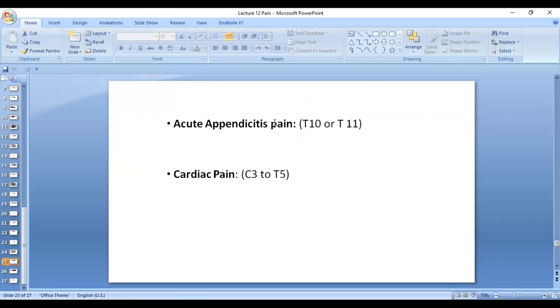Acute appendicitis pain is an example of referred pain at T10 or T11. Cardiac pain, C3 to T5, is also an example of referred pain.